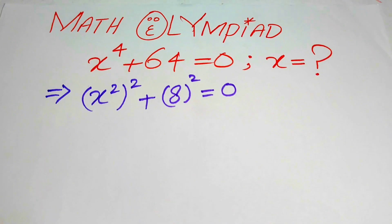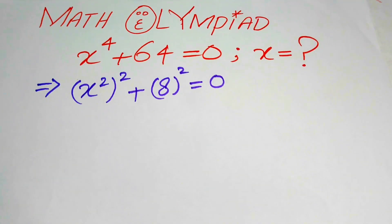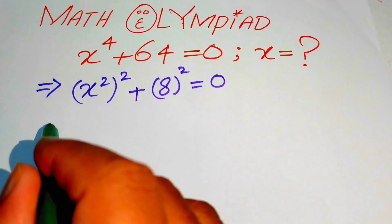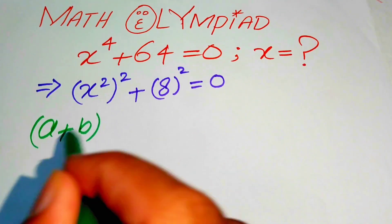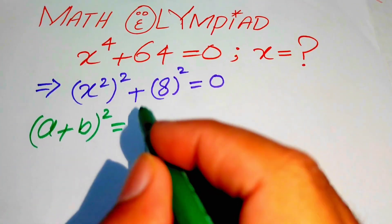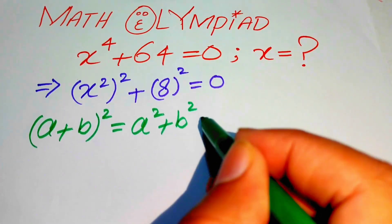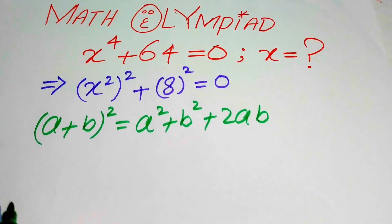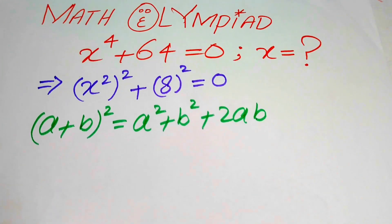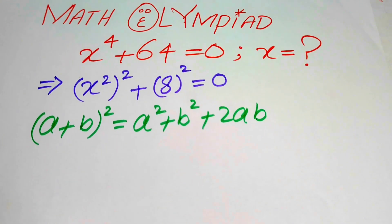In the next step we use the square identity. You know that if we have a plus b whole squared, it equals a squared plus b squared plus 2 times ab. This is the square identity, and now we make the completing square of the above term.